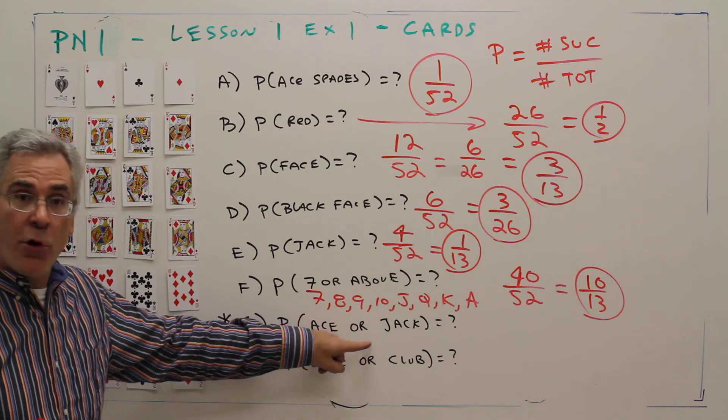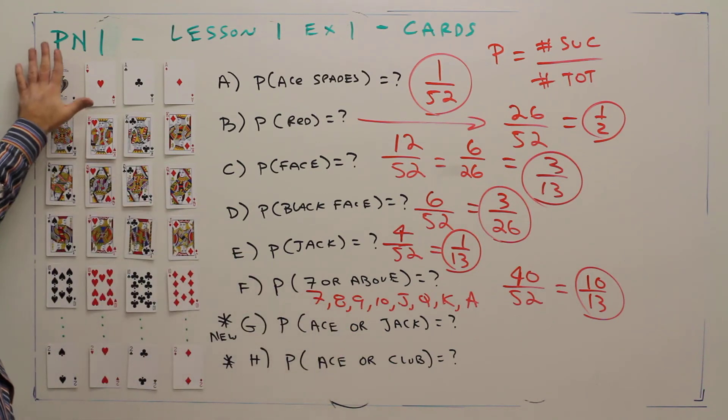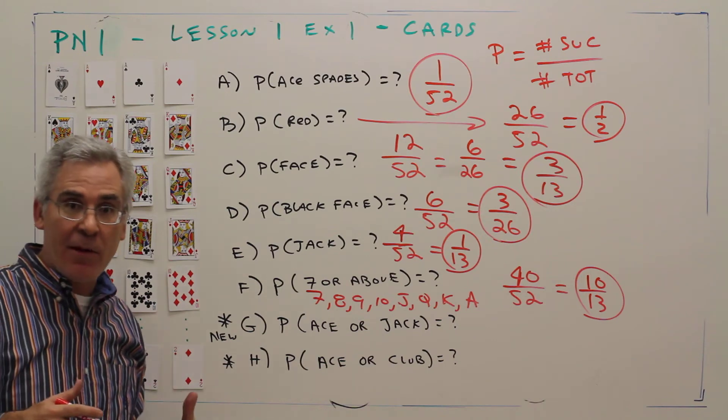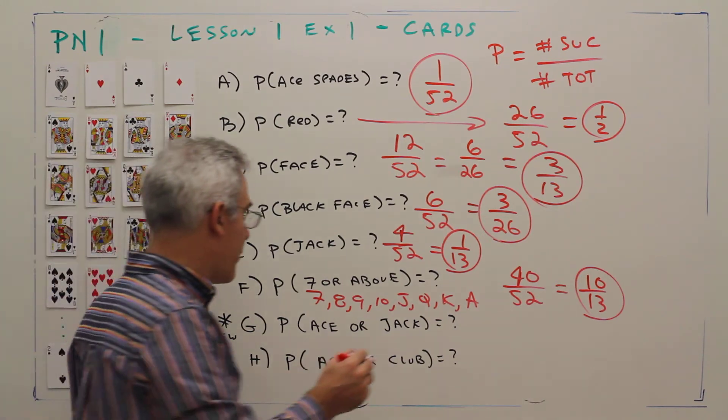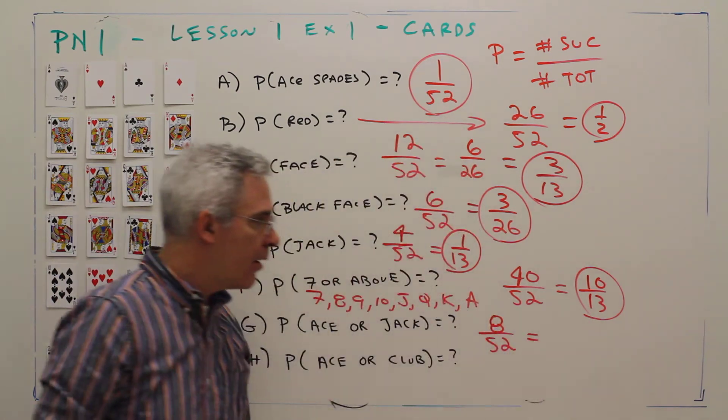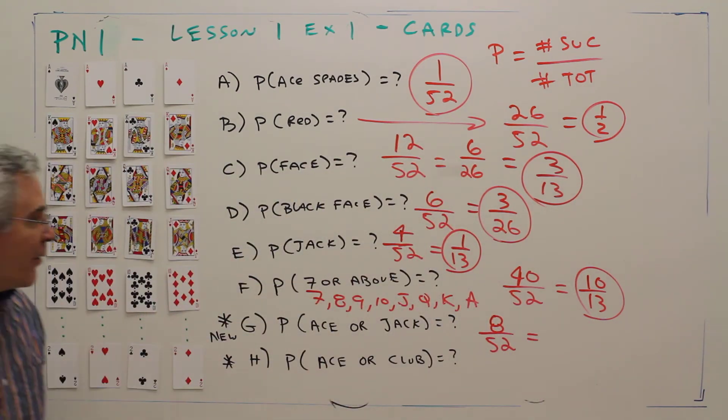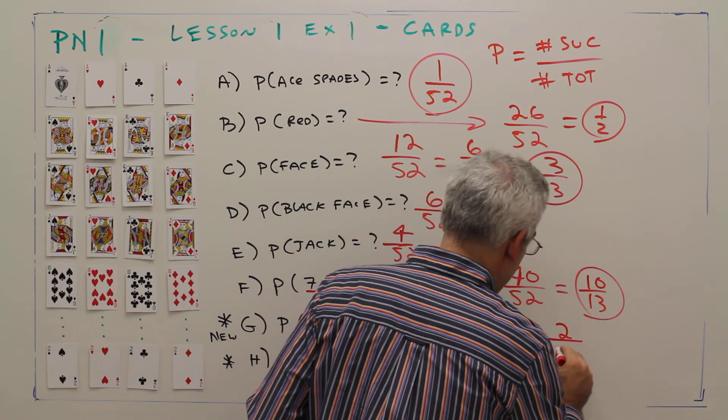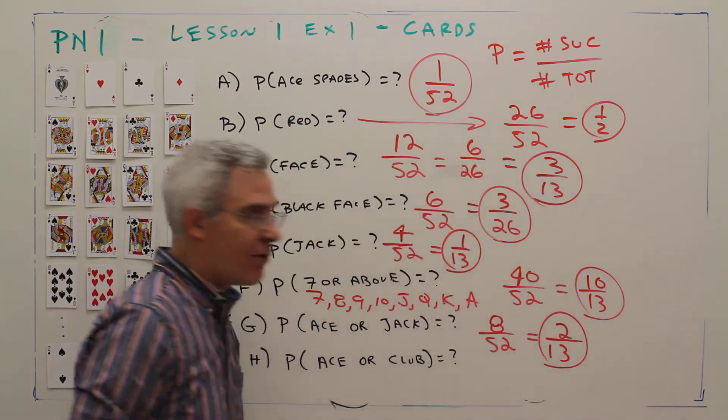Part G: probability of an ace or a jack. Well, I've got 4 aces and 4 jacks. So combining them, I've got 8 successful outcomes over 52 total. And again, I could divide through by 4 and get 2 over 13.